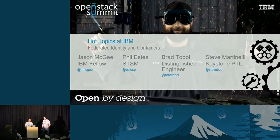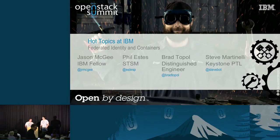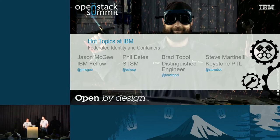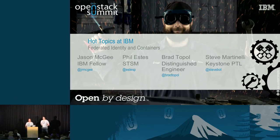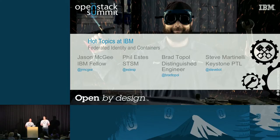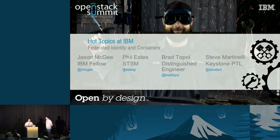Hello everyone. I'm Brad Topol and this is Steve Martinelli. We have Phil Estes and Jason McGee. We have a nice session on some hot topics: federated identity and containers. I'm an IBM Distinguished Engineer. I lead all of our OpenStack upstream contributions, and I'll let the other speakers introduce themselves when they speak.